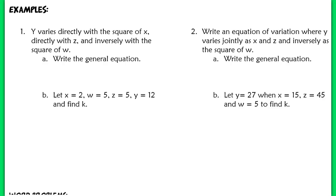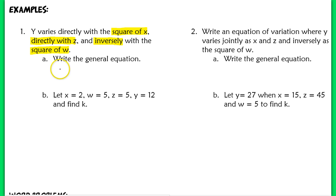In example one, y varies directly with the square of x — that's one independent variable — and it also varies directly with z, our second independent variable. It also varies inversely with the square of w. So we have four total variables. Writing the general equation: y equals kx²z over w². Notice there is only one k value.